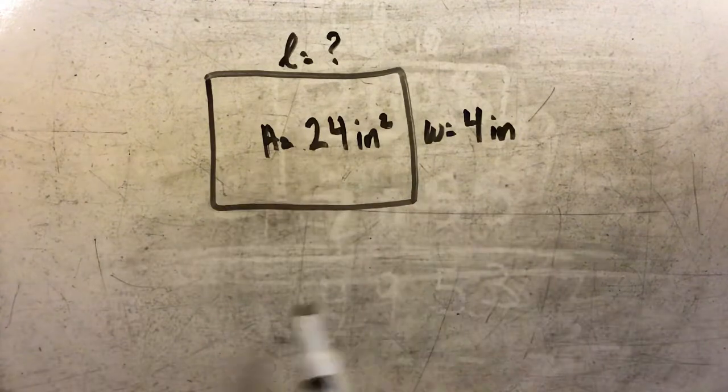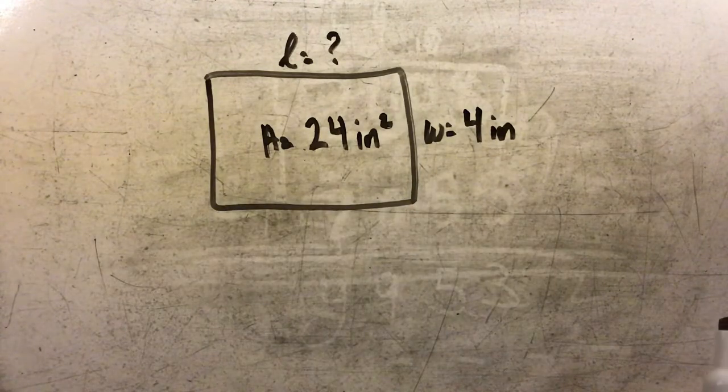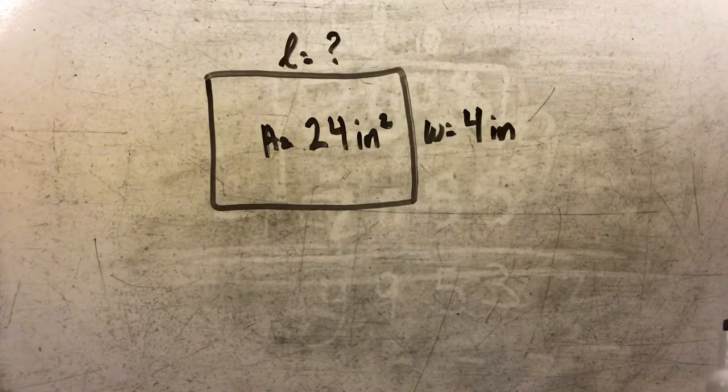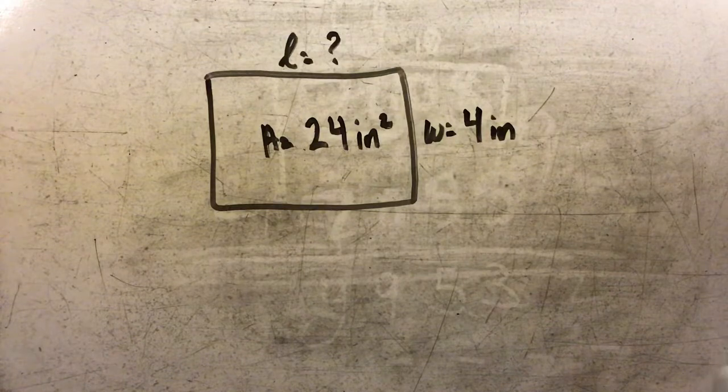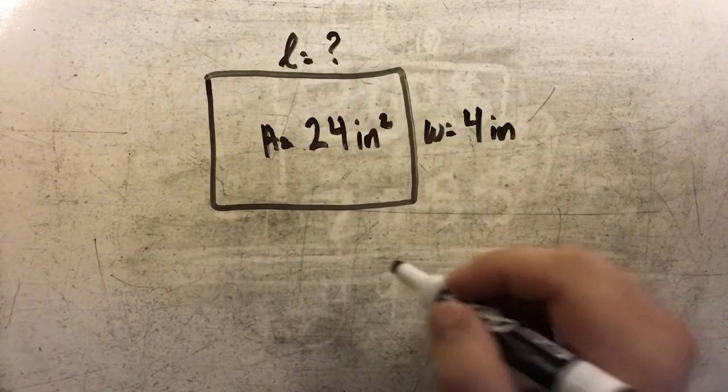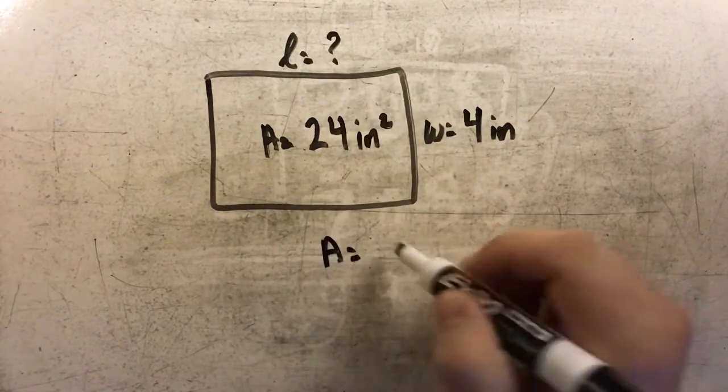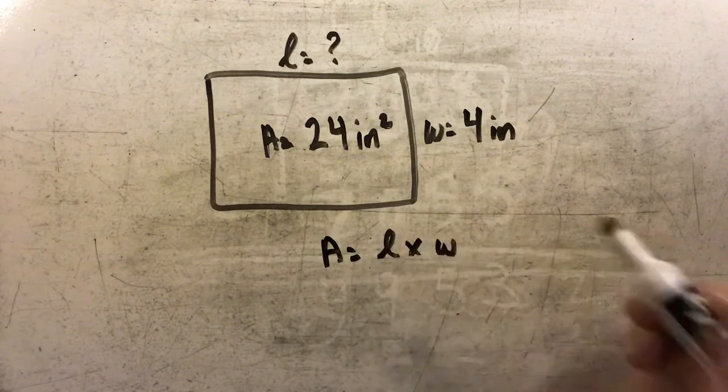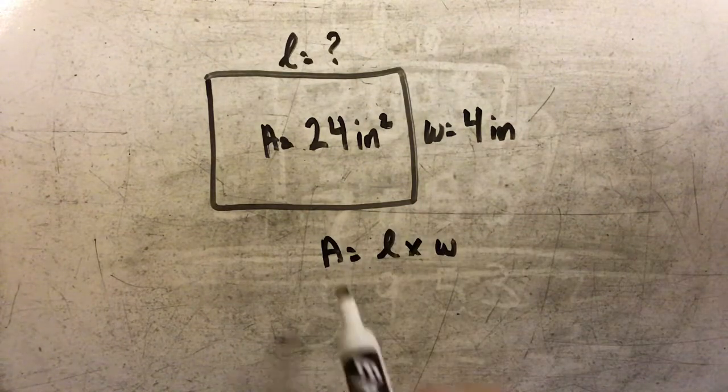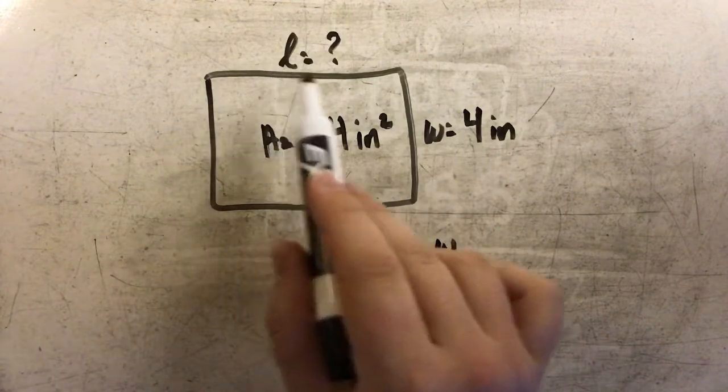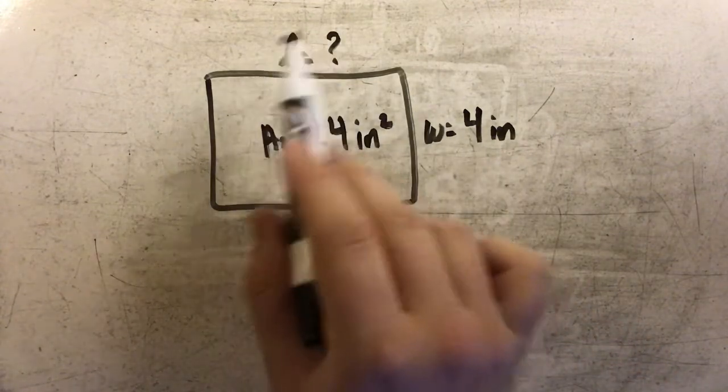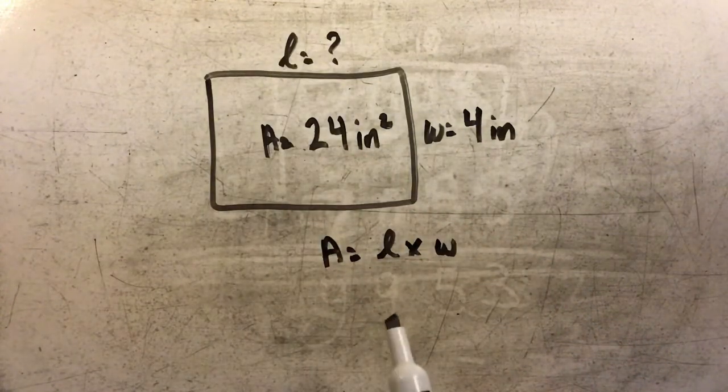I'm going to use my knowledge of how to solve area of a rectangle to find the missing side length. If I know that area equals length times width, I'll simply plug in the information I have to find my missing length.